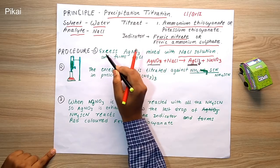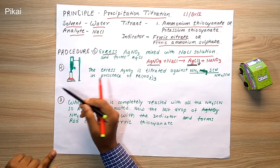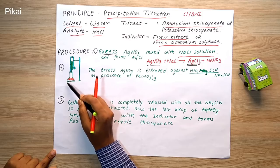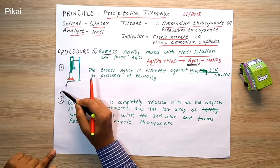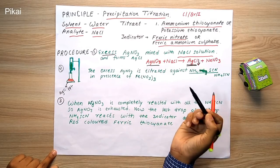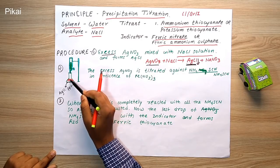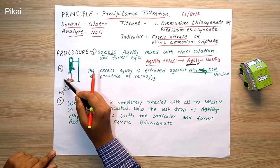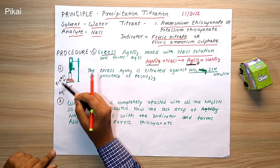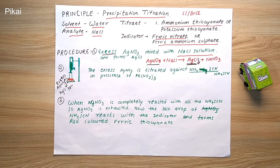Remember, the AgNO3 is in excess, so there is still AgNO3 remaining. In the diagram, the AgCl precipitate is shown by black dots at the bottom of the conical flask. The excess AgNO3 that is left unreacted is denoted by the red color — this red color represents the excess AgNO3 remaining above the AgCl precipitate.